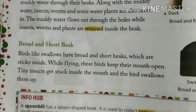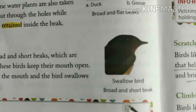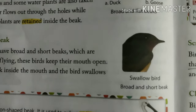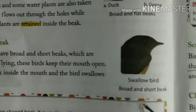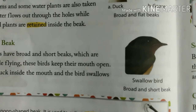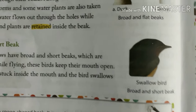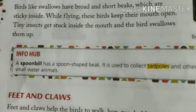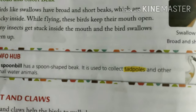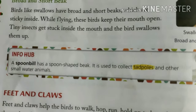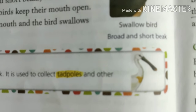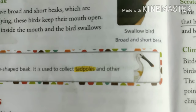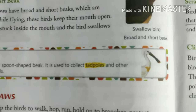Next we have the broad and short beak. Birds like the swallow have a very broad and short beak with a sticky substance inside. They open their mouth and flies and insects get stuck inside the beak and are swallowed. The spoonbill bird has a spoon-shaped beak, used to collect tadpoles and other small water animals.